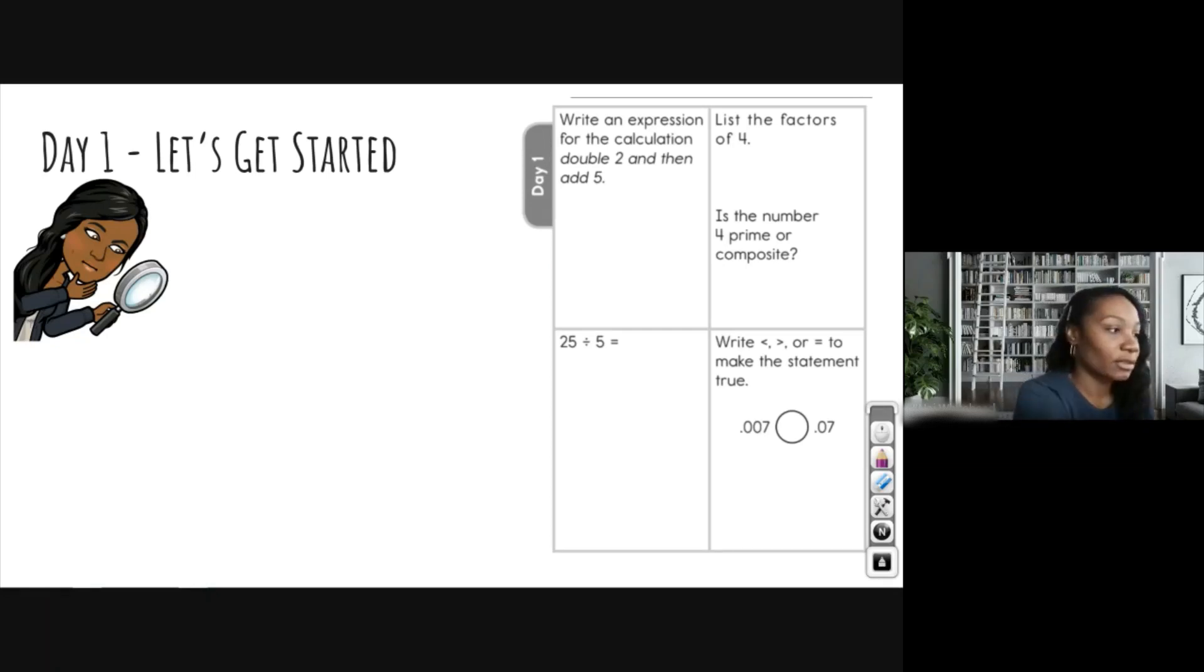So we're going to start by writing two, and to double two we're going to multiply by two. Okay, and then we're going to add five. All right, we did exactly what it told us to do and we wrote an expression.